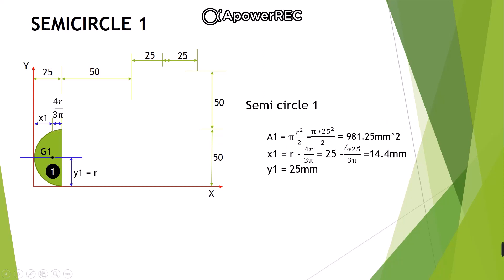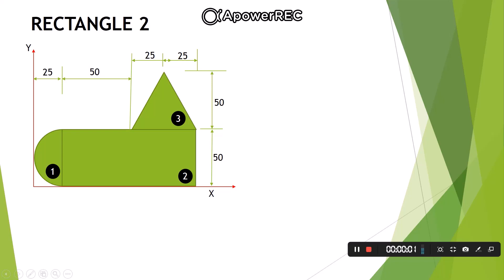With r = 25 mm: a1 = πr²/2 = π × 25² / 2 = 981.25 mm². x1 = 25 − (4 × 25)/(3π) = 25 − 10.6 = 14.4 mm. y1 = 25 mm from the X-axis, since the horizontal line of symmetry passes through the center of the semicircle at a height equal to the radius.